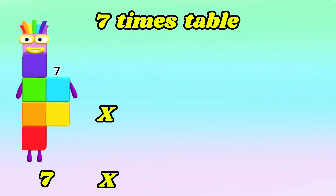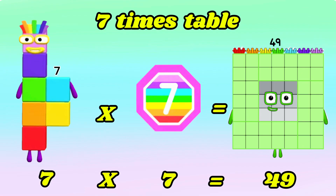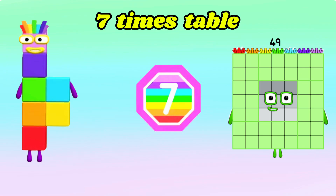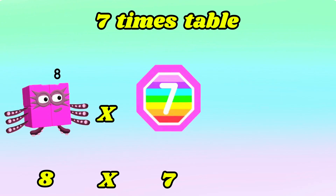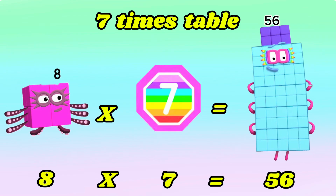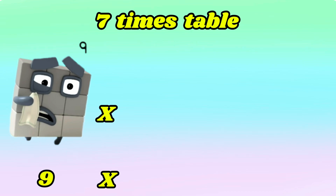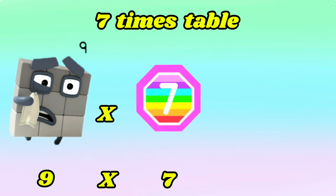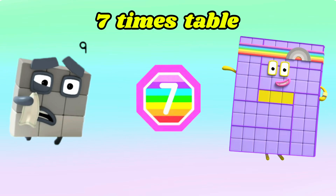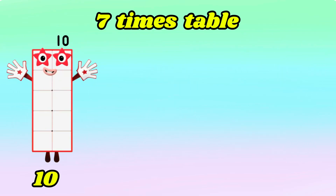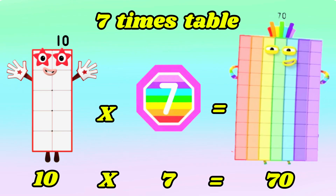7 times 7 is equals to 49. 8 times 7 is equals to 56. 9 times 7 is equals to 63. 10 times 7 is equals to 70.